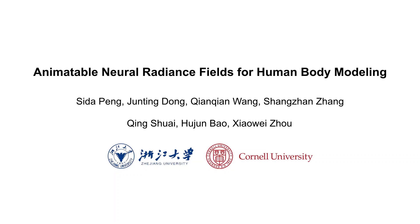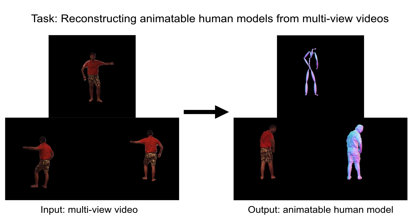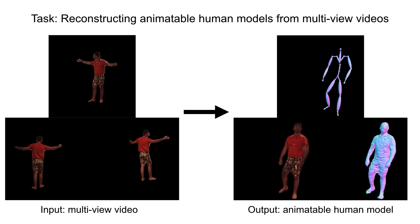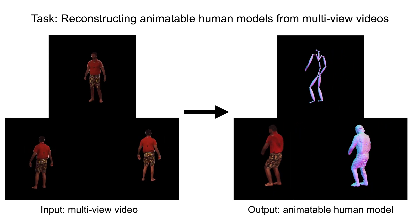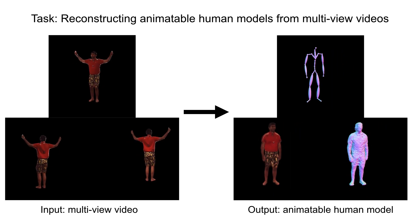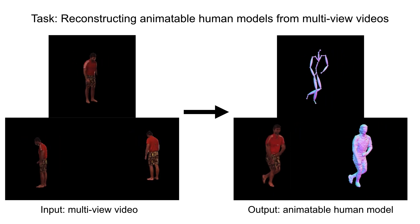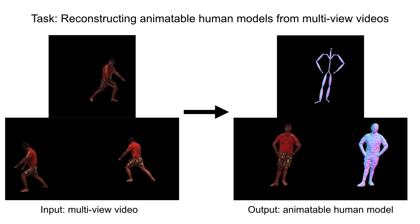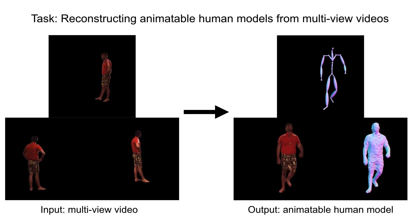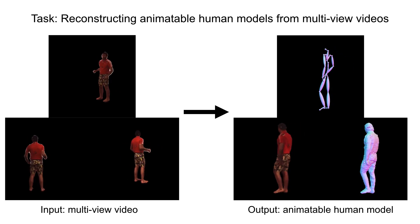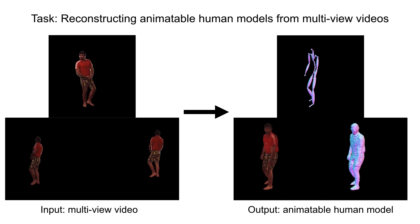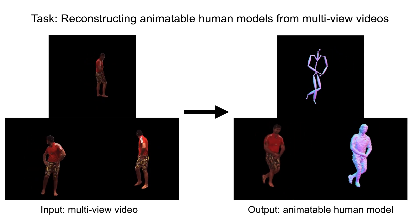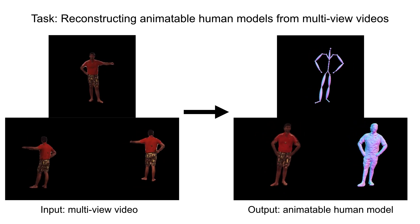In this video, we present our work Animatable Neural Radiance Fields for Human Modeling. Given a multi-view video of a performer, our method reconstructs an animatable human model, which can be used for free-view synthesis and 3D shape generation under novel human poses.